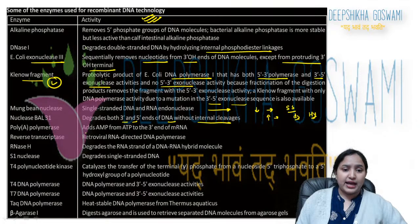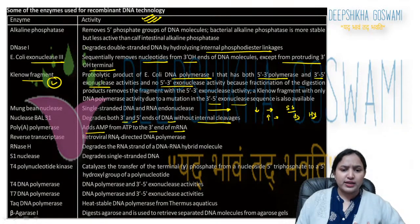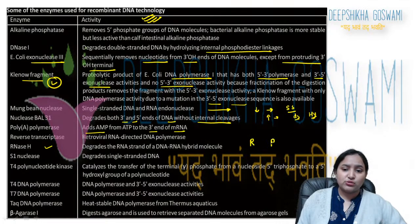Poly-A polymerase adds AMP from ATP to the 3' end of mRNA. Retroviral RNA-directed DNA polymerase (Reverse Transcriptase) contains RNase H activity, which degrades the RNA strand by ribonucleolytic activity. S1 nuclease degrades single-stranded DNA.